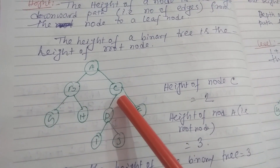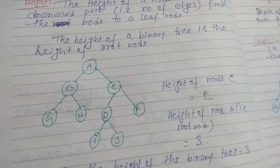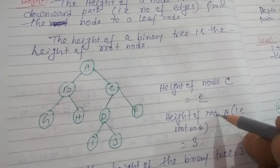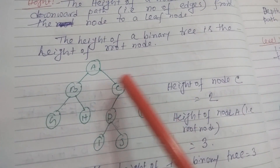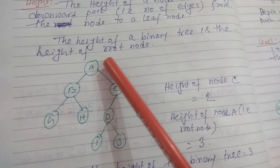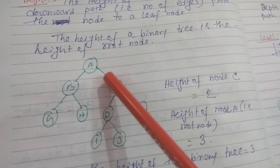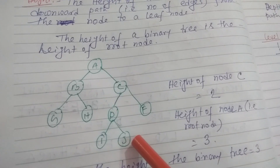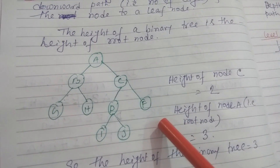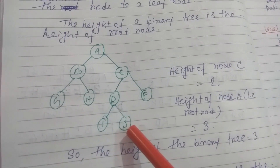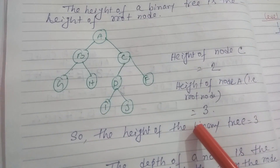Now what is the height of node A? Node A is the root node. The longest downward paths both have a value of 3, so the height of node A, that is the root node, is equal to 3. Since the height of the root is the height of the binary tree, the height of this binary tree is 3.